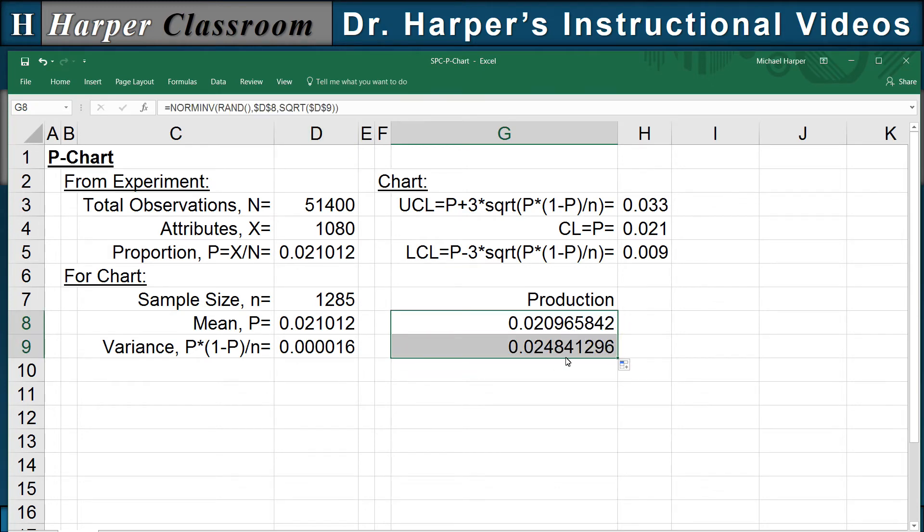Now the lower control limit is just going to equal .009. The center line is just going to equal .021. And the upper control limit, that's going to equal .033.